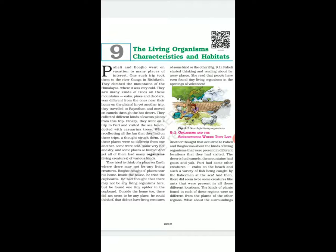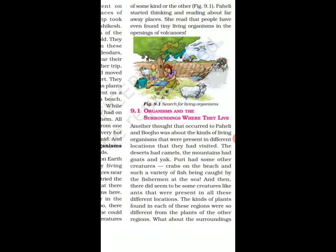There are aquatic animals inside the water. If we are talking about a desert region, then there are camels, and the plants there are also different. So there are different kinds of animals, birds, and trees in different regions. If you look at home, you will find many types of creatures. So organisms and their surroundings where they live are connected.